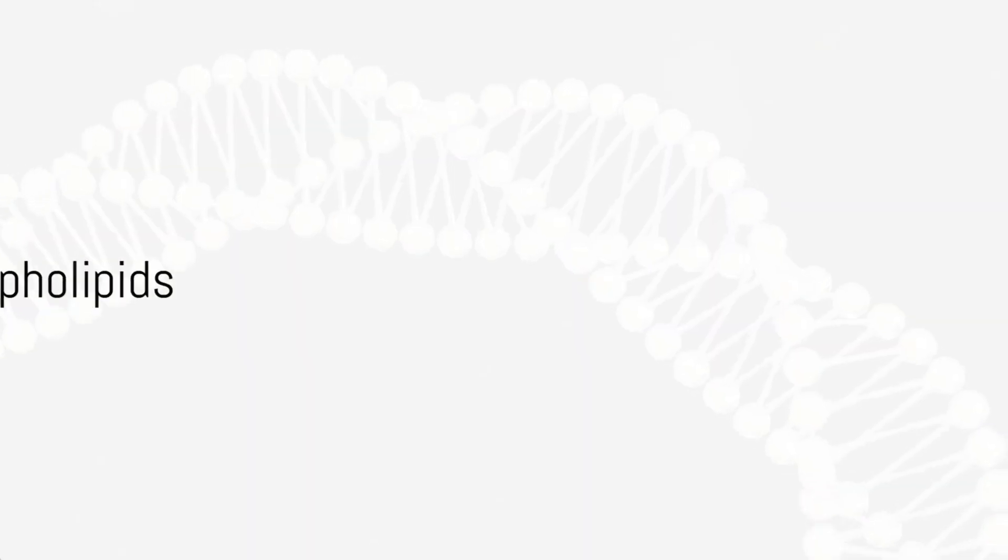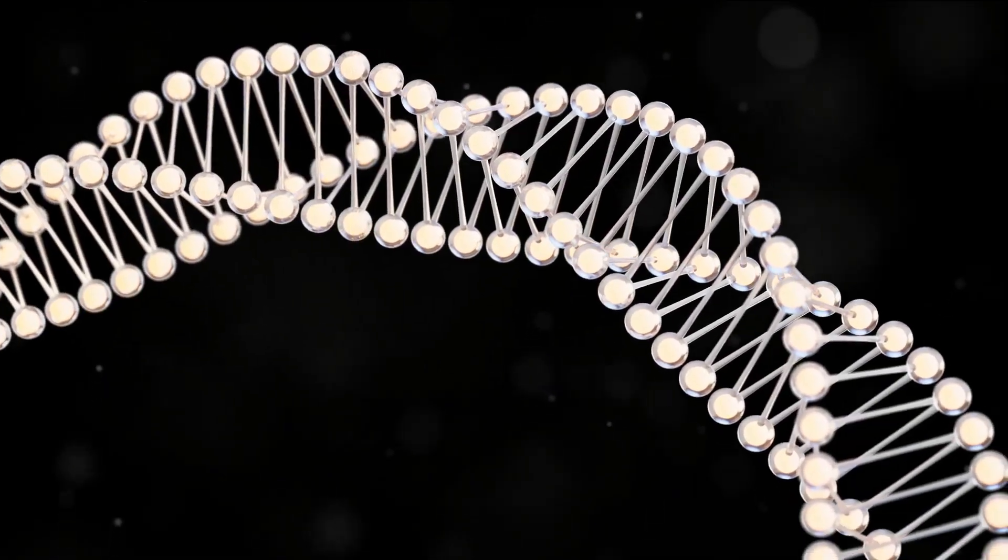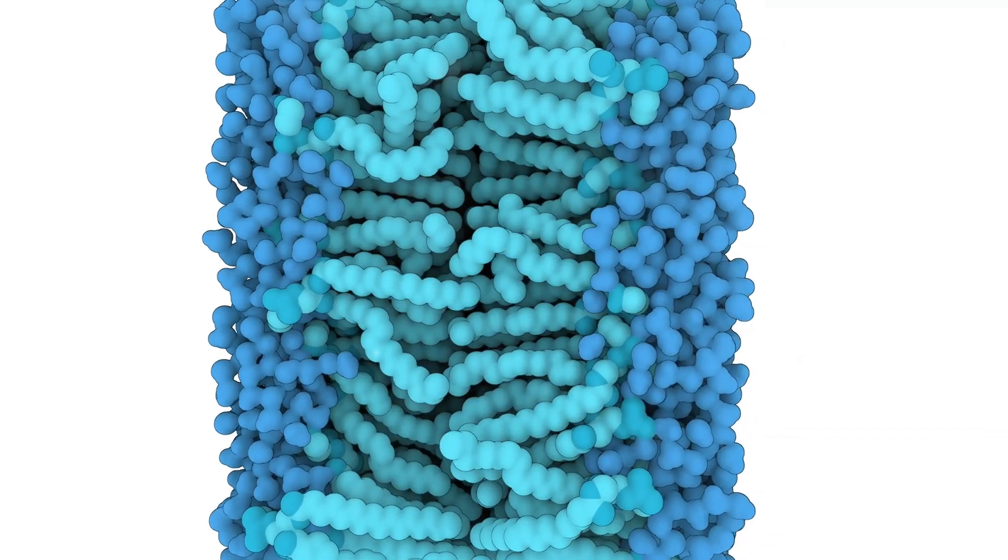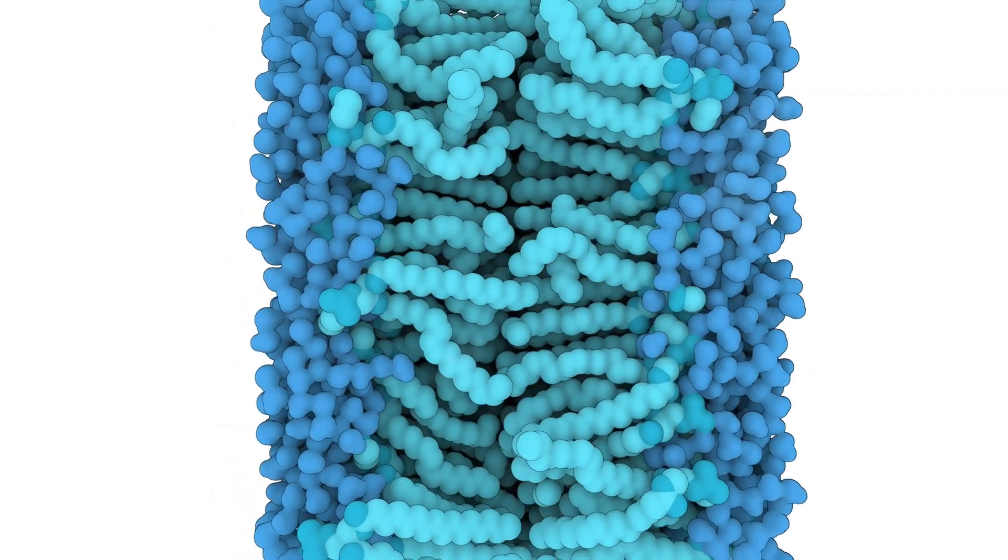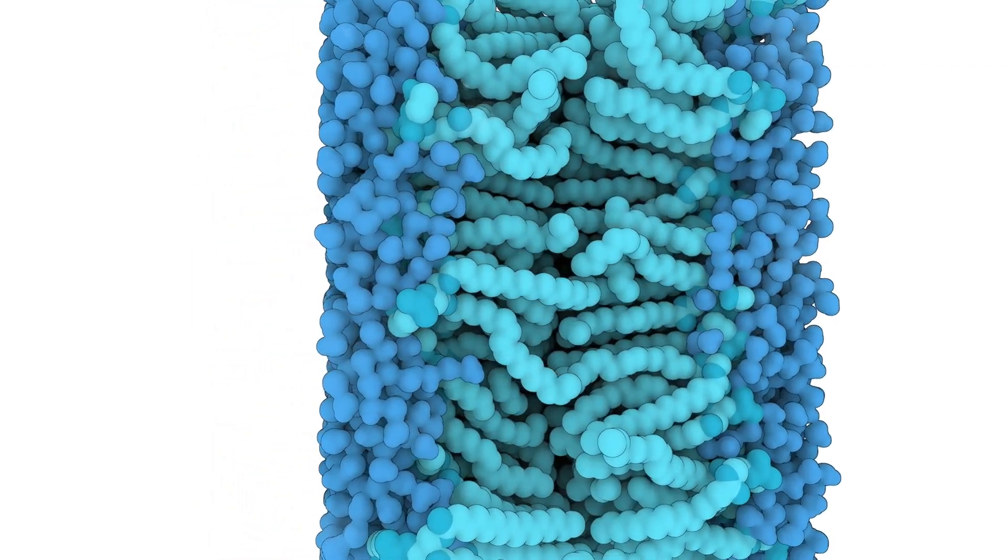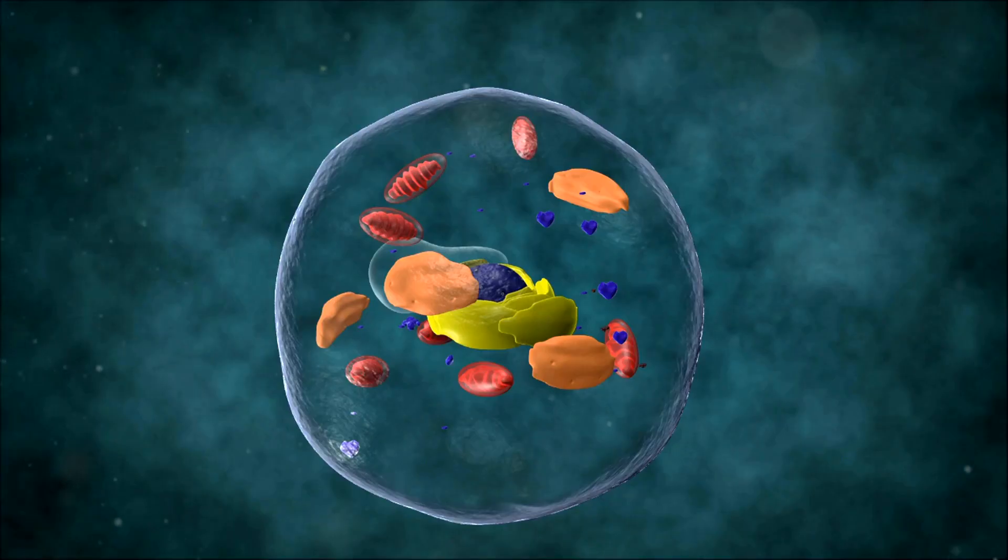But phospholipids are not just passive barriers. They play a crucial role in cellular communication and signal transmission. Certain types of phospholipids can be broken down into secondary messengers, which relay signals within the cell. Others form lipid rafts, specialized areas of the membrane that gather specific proteins for cell signaling.